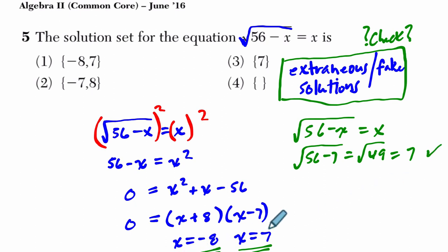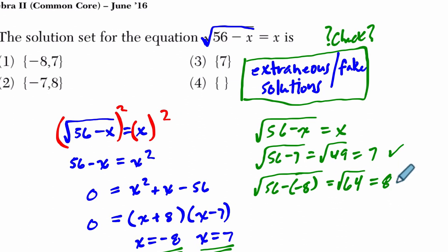But then what happens if we plug in -8? If you plug in -8, you get 56 - (-8). And when I thought of that, I'm like, oh, well, that's 64. And the square root of 64 is 8. But that does not equal x, which is -8. x has to equal -8. So this is extraneous.